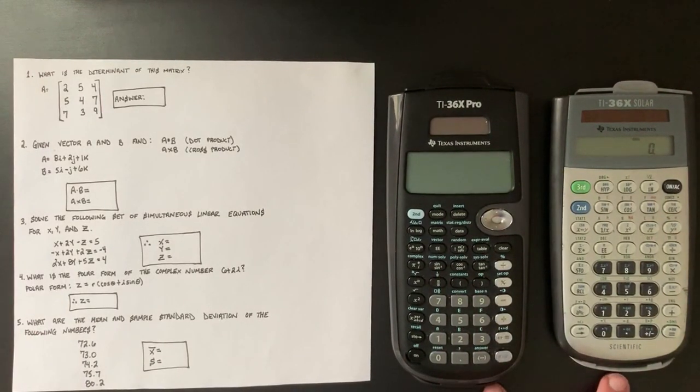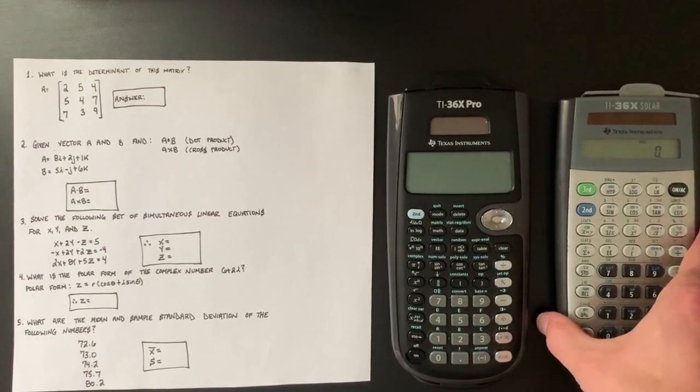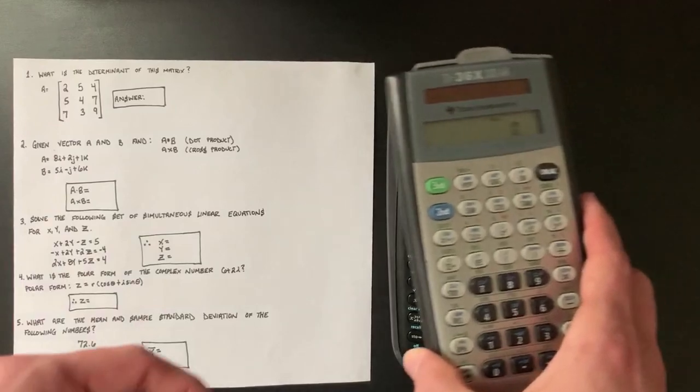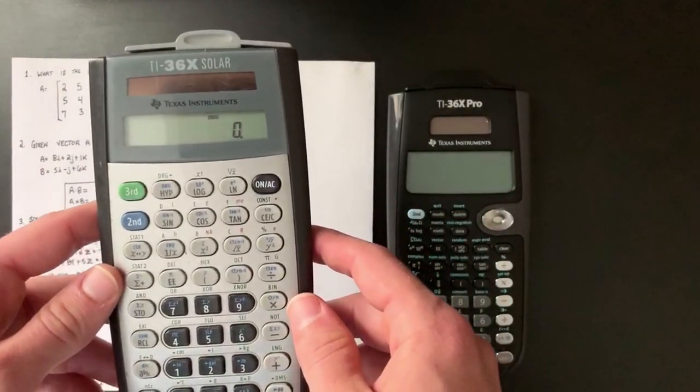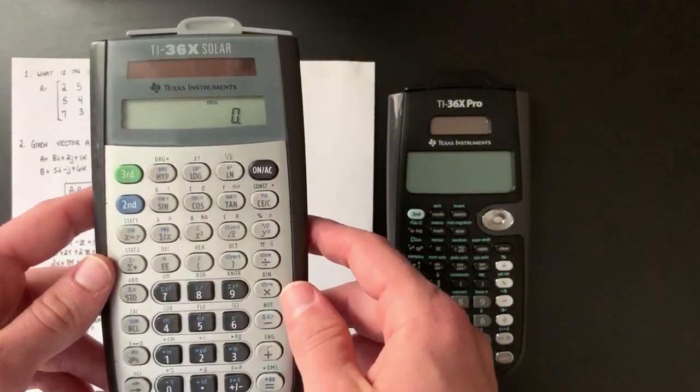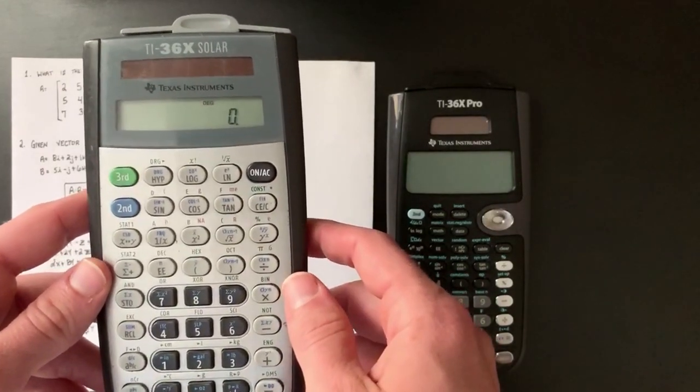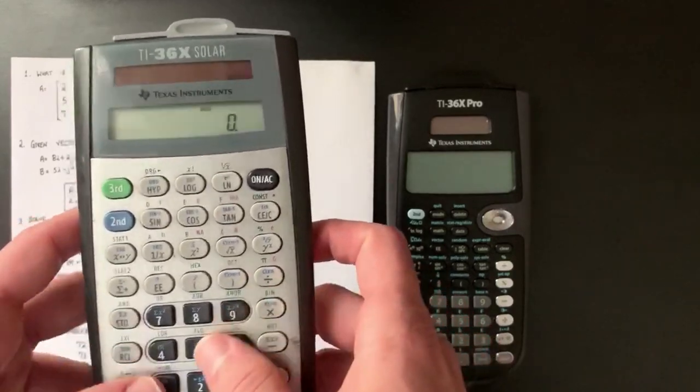You guys are probably wondering why I have two separate calculators here. The reason I did this was to show you guys a mistake that I made on my FE. So when I went to buy my calculator for the FE, I bought the TI-36X Solar to begin with and then I found out this calculator has almost no functionality with it. It's kind of hard to use.